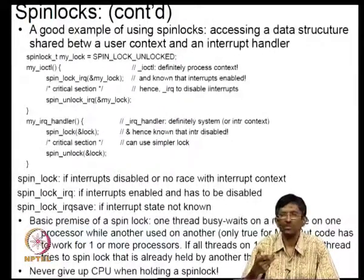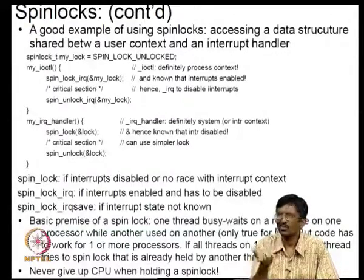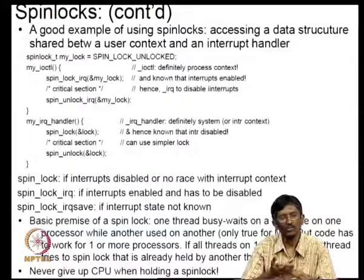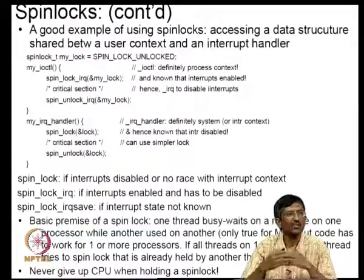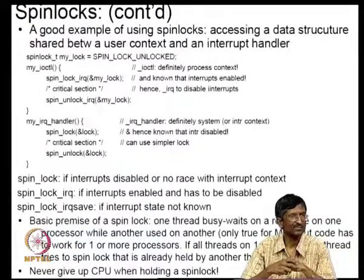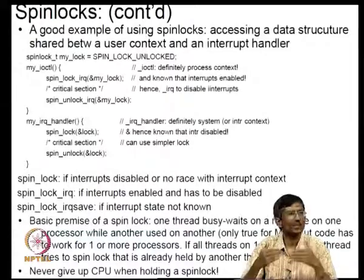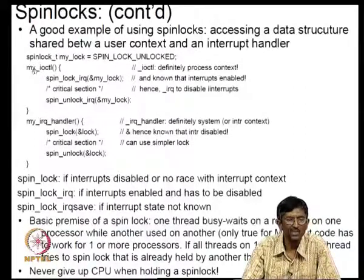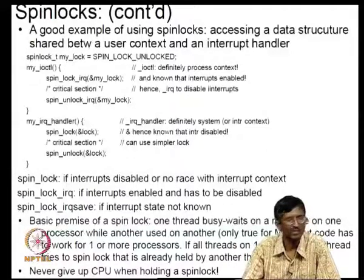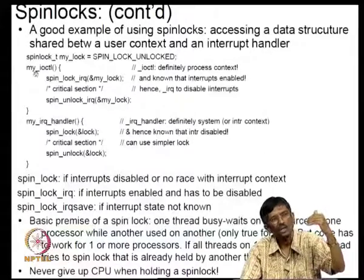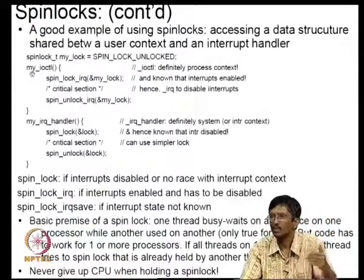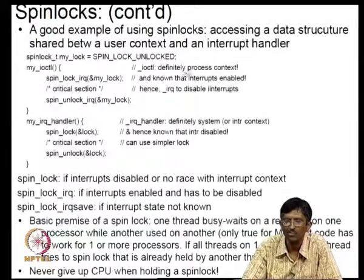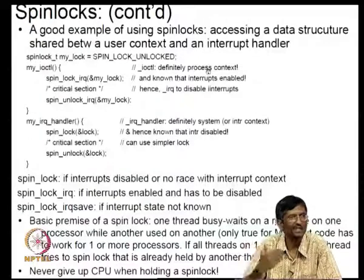Similarly for ioctrl — for example, with floppy disks you might call ioctrl to specify single or double density. Since we are calling from user space through a system call, we are in the process context — meaning interrupts are enabled. Therefore we use SPINLOCK_IRQ to disable interrupts before doing our critical work.